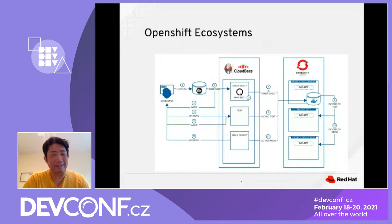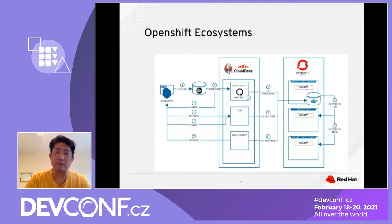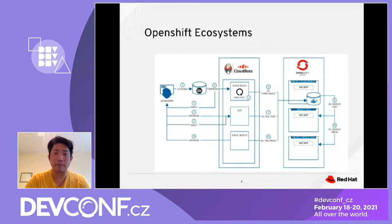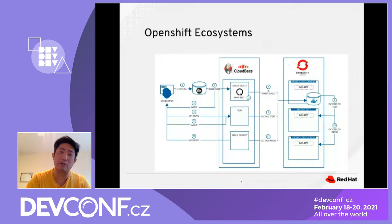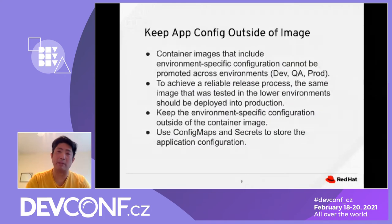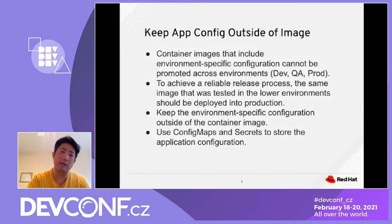Now that we have our basic understanding, let's think about how we ensure quality in each individual piece. The first thing is to keep application config files outside of the image. This is important because a container image that includes environment-specific configuration cannot be promoted to production. Keeping config outside the image allows the same image to be used across Dev, QA, and production. An example is to use ConfigMap or Secret to store the application configuration.